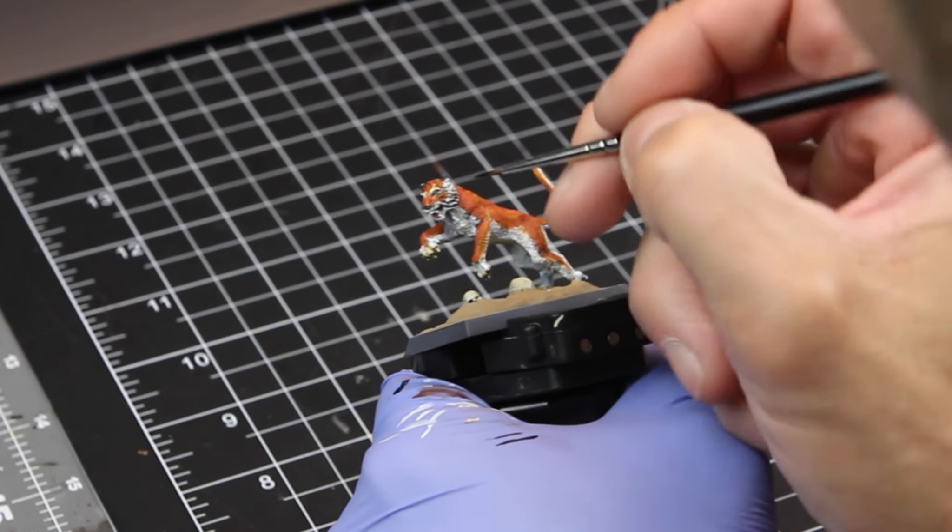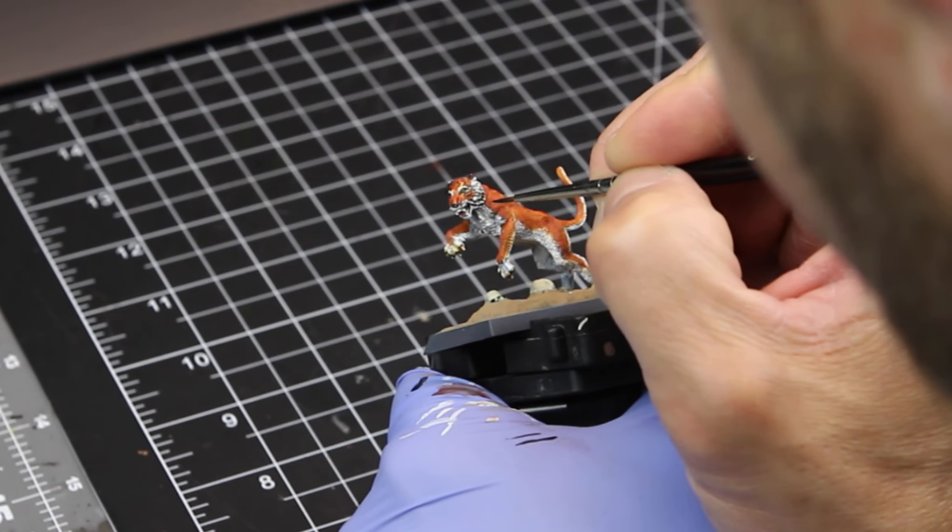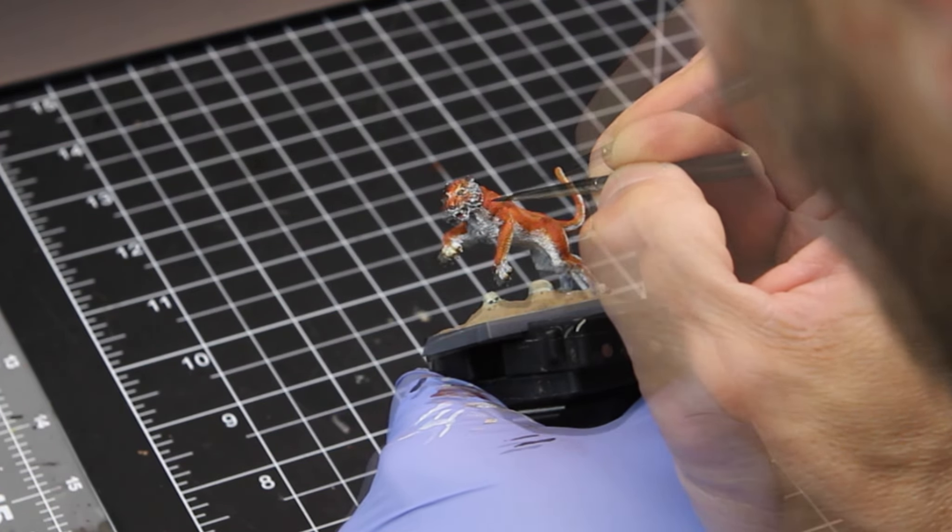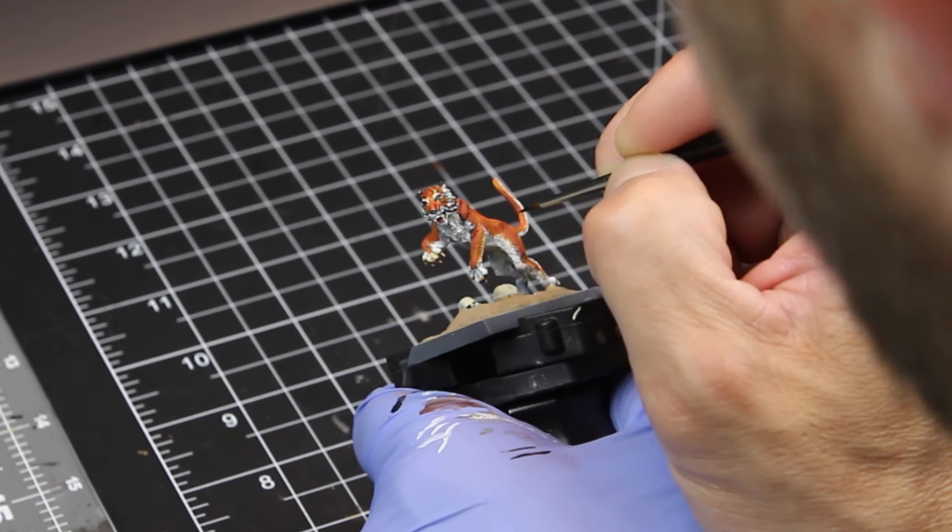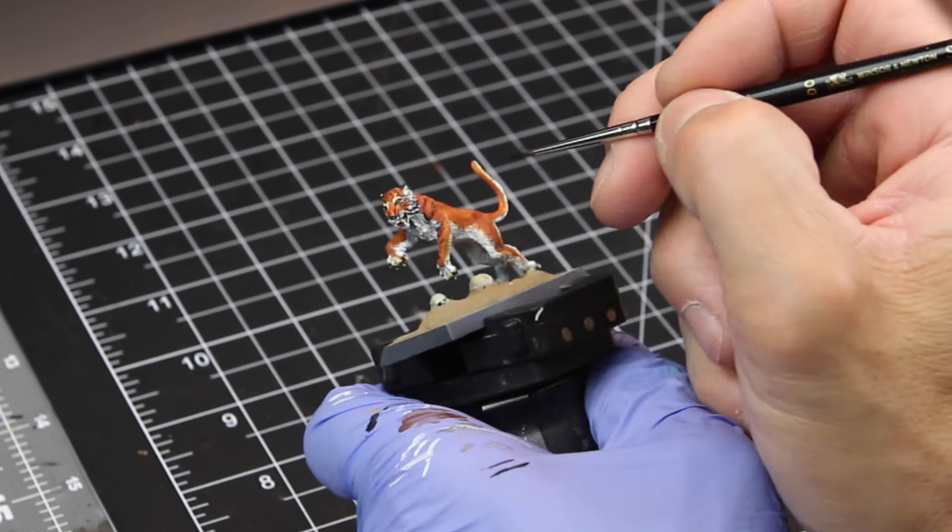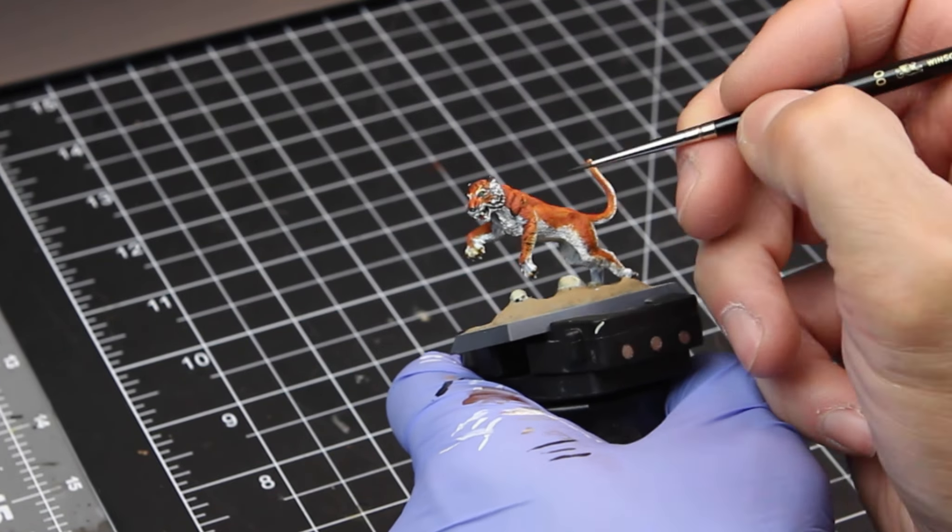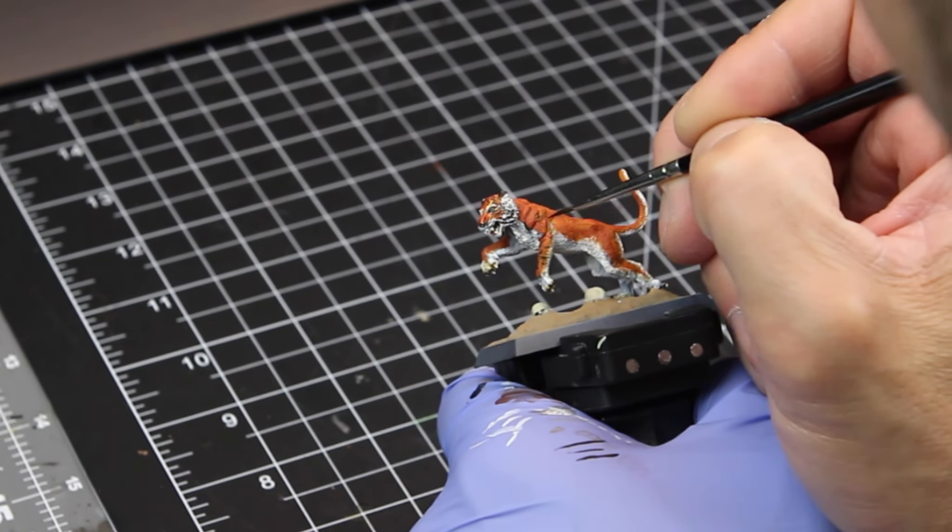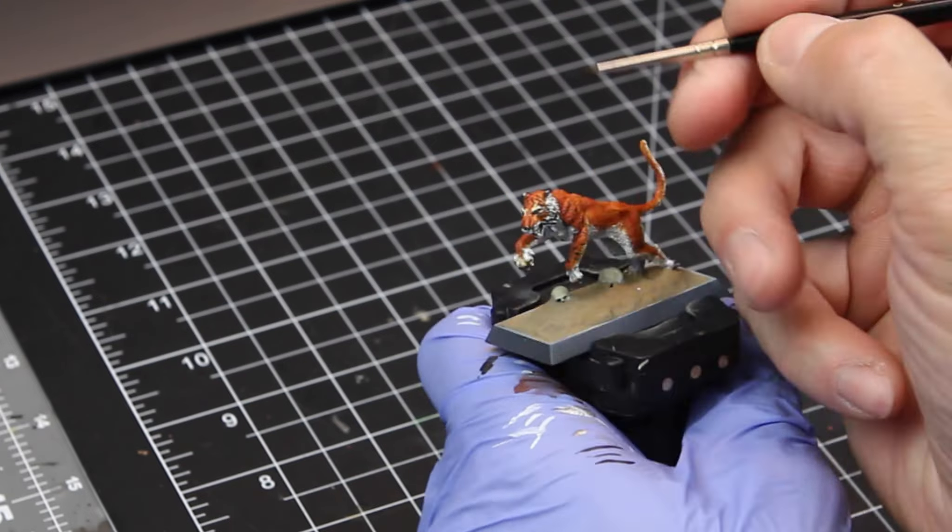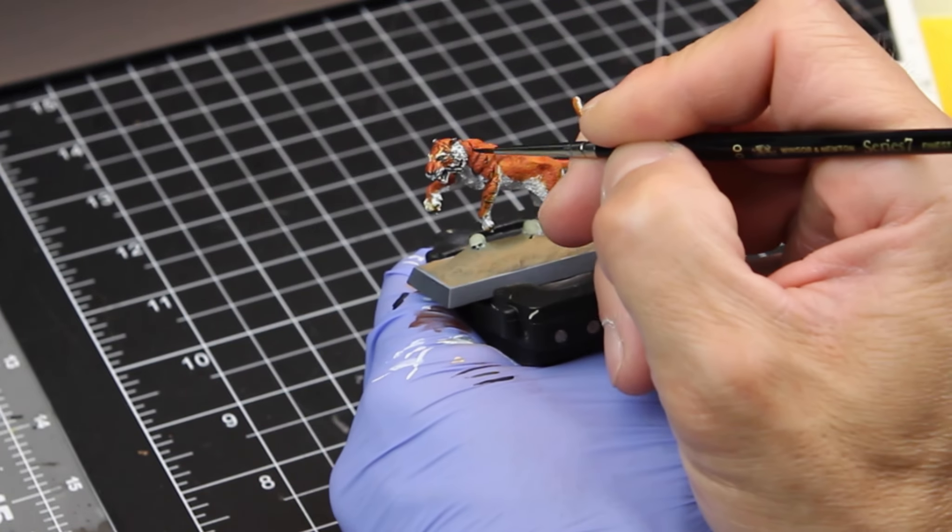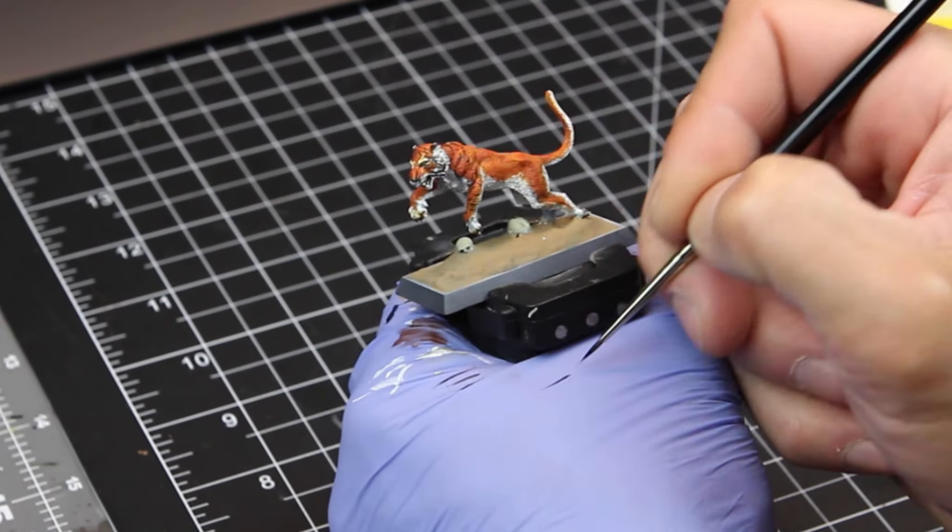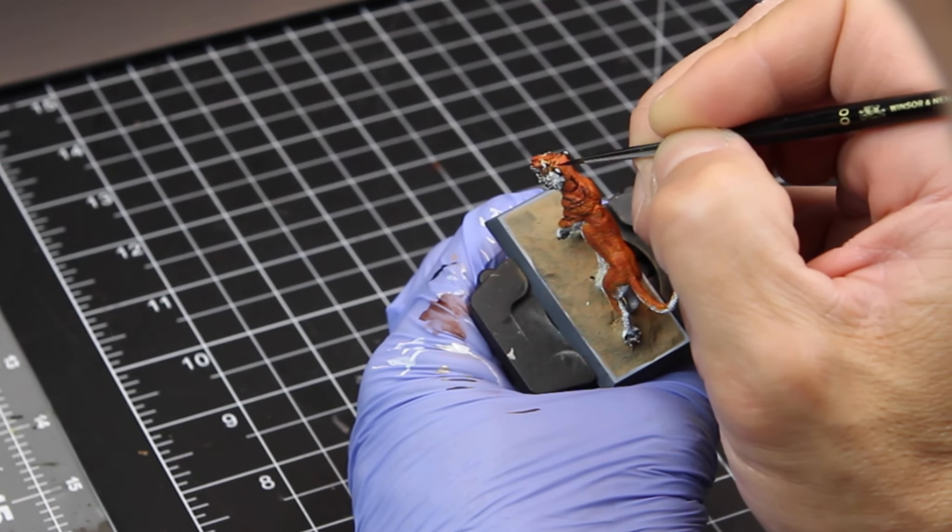So you can see how smooth that paint was applied to my glove. Some nice straight strokes there. That's pretty much how you want it to apply fine detail like these stripes. Basically, you don't want to see the paint in a ridge or a glob on your miniature when you're painting, especially when you're going for this kind of detail.